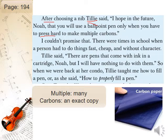Multiple means many, and carbons means copies. As you can see in this picture, this is carbon paper. It was used before xerox copying machines were popular. People used to make copies of something they write by using these papers — they put one white paper, then one blue paper, then another white paper, and then start writing by pressing hard so that what they write is copied onto the other white paper.